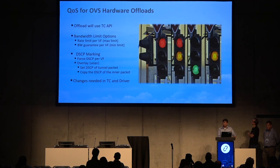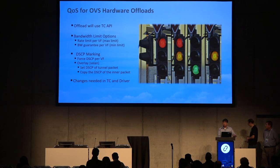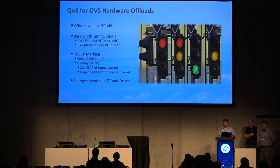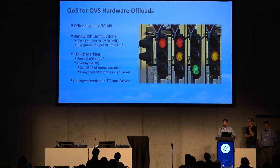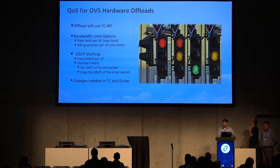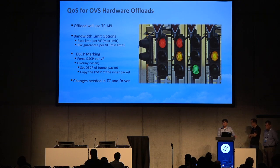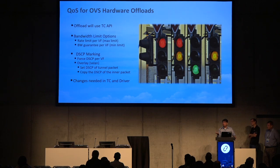QoS is another important feature — the ability to control bandwidth at a VF level, offloaded to the TC flower API. For bandwidth limiting you have two options: rate limit per VF, setting a maximum bandwidth limit, or bandwidth guarantee per VF, allocating minimum bandwidth per VF. Both max and min options are being pushed to the community. You can also do DSCP marking per VF in two ways: copy the inner DSCP from the inner packet to the outer overlay packet, or set the overlay packet DSCP independently from the inner packet.